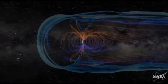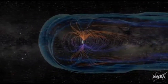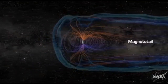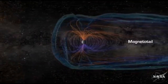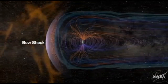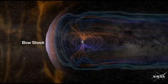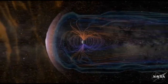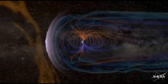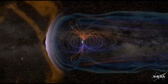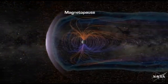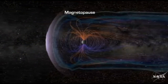The pressure of the solar wind flattens the nose of the magnetosphere and drags the field lines into a tail. A bow shock wave forms upstream, much like a boat moving through water, and most of the onrushing charged particles are diverted around the outer boundary of the magnetosphere, called the magnetopause.